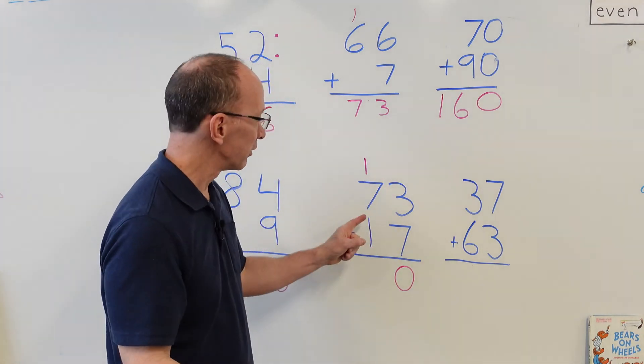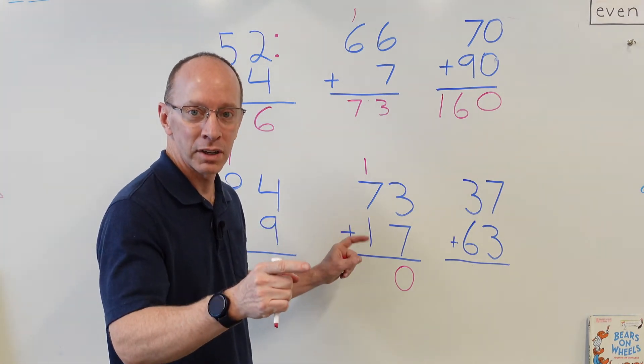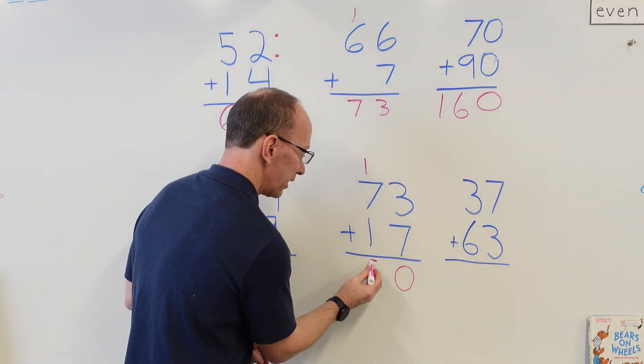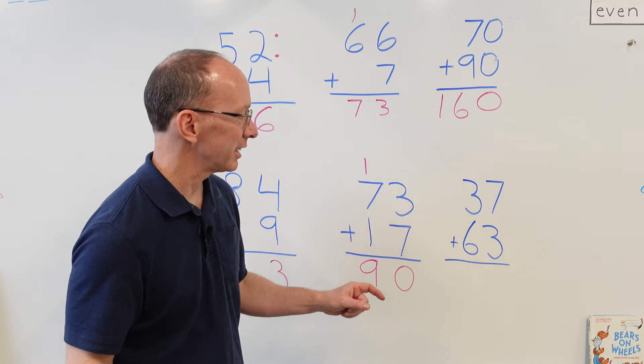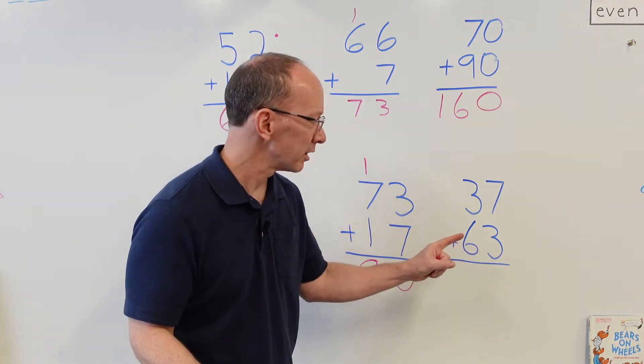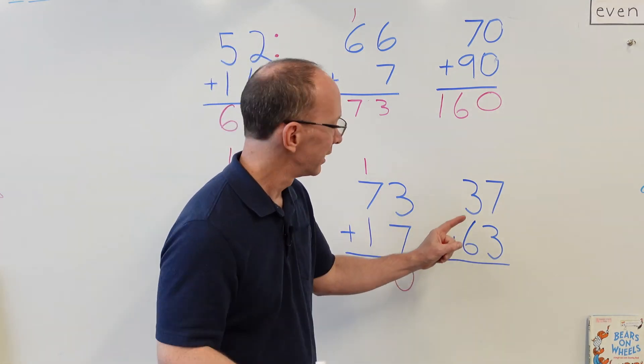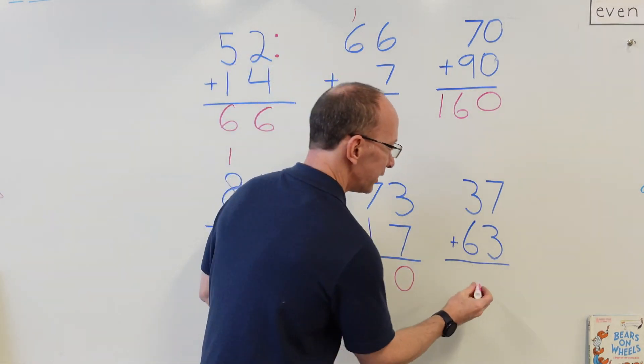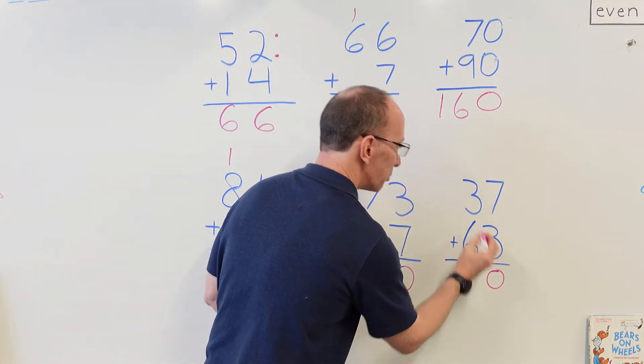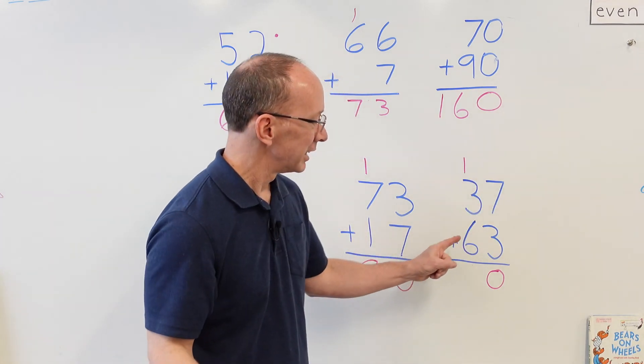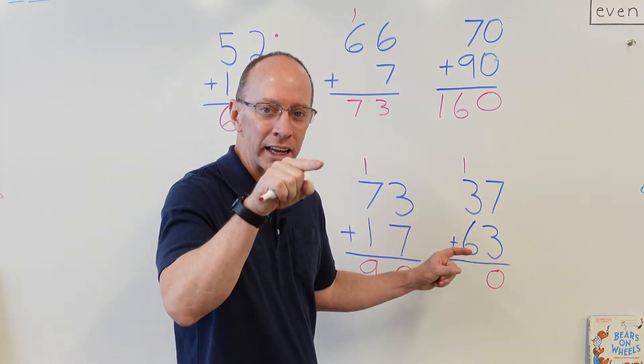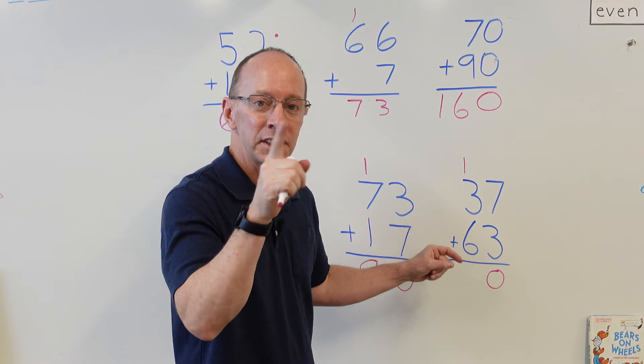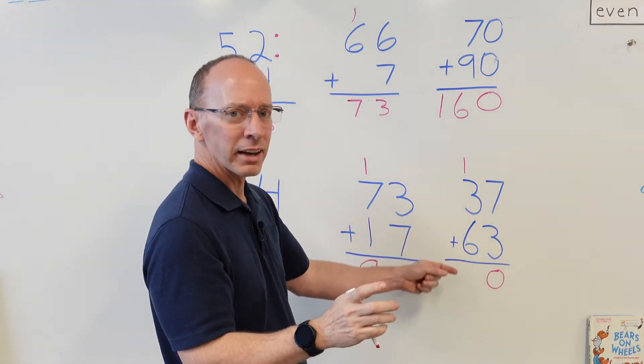Add the tens. Seven plus one is eight, plus another one is nine. Yeah, you guys are doing fantastic. All right, let's do this next problem. It's a little tricky. Seven plus three: seven, eight, nine, ten. Put the zero here, put the one here.